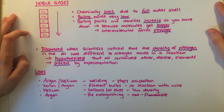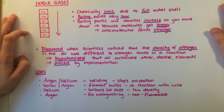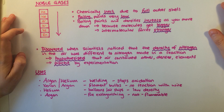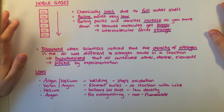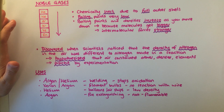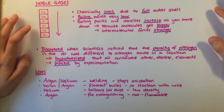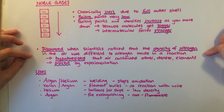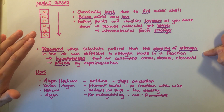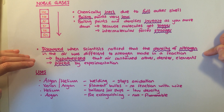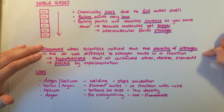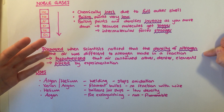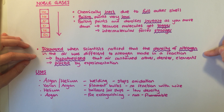The noble gases make up group 0 of the periodic table. They are chemically inert, which means they are very unreactive. They have a full outer shell, which means they are very stable and do not need to join with other atoms. They are found as individual atoms rather than molecules. The noble gases were discovered when scientists found that the nitrogen produced by chemical reactions is a different density to the nitrogen found in air, leading them to hypothesise that the nitrogen in the air must contain other, more dense elements. Through experimentation, they proved this and the noble gases were discovered.